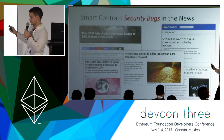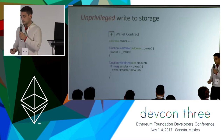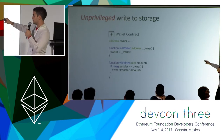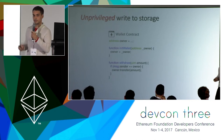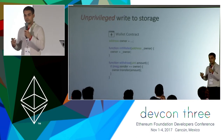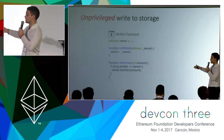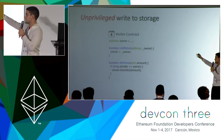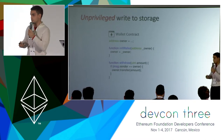Let me go into details of this second flaw more precisely. It was a case of unprivileged write to storage. Here I have a really simple toy example of this kind of flaw — these examples are meant only to illustrate the flaws and not to have real logic in themselves. This is a wallet contract which contains a storage variable, owner, which specifies the owner of this wallet.